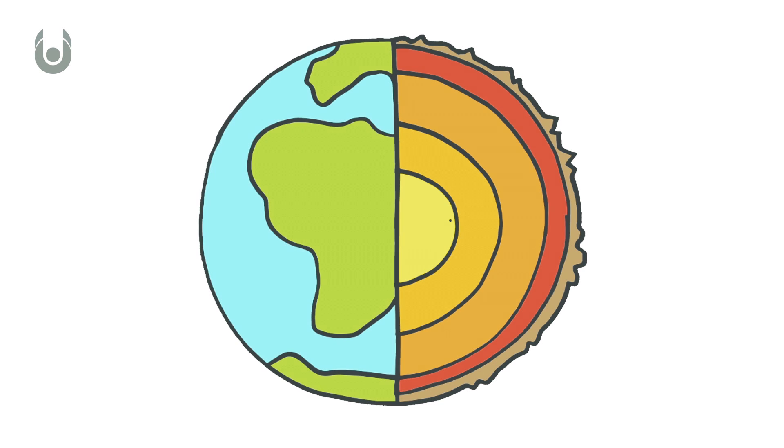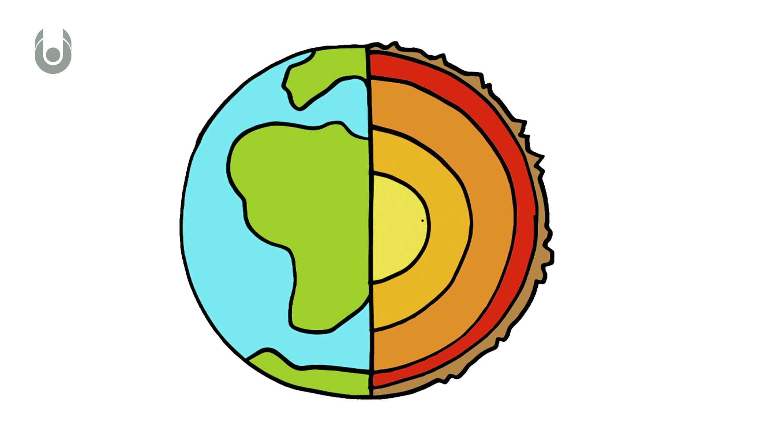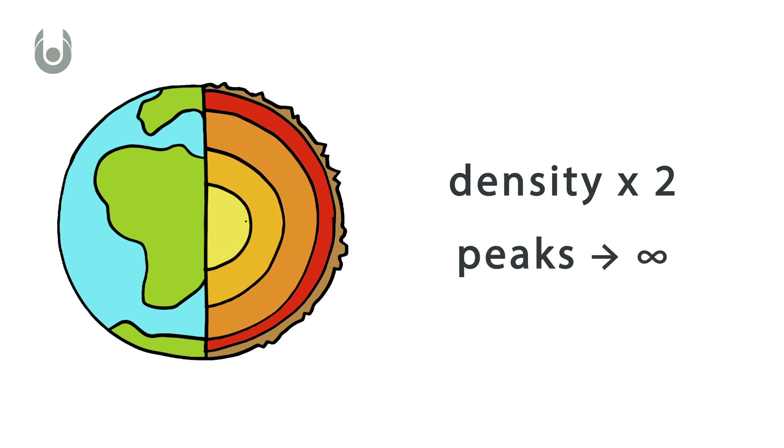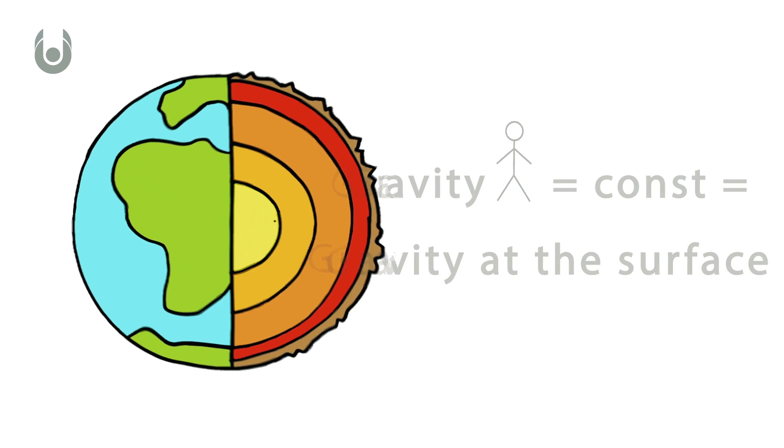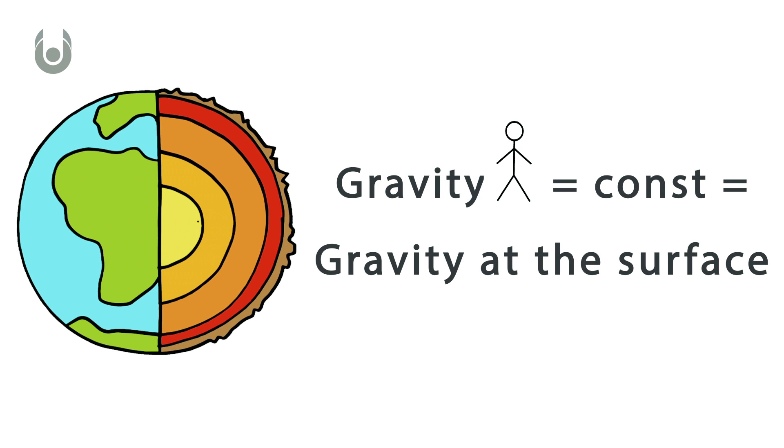When the distance to the center is halved, the density doubles and peaks to infinity at the center. Also, in order to get through the earth, you or the object falling through would have to have the force of gravity remaining constant and equal to the value at the surface.